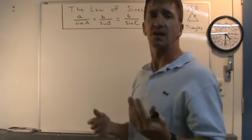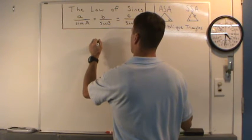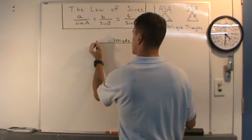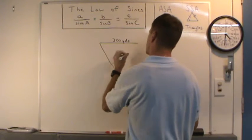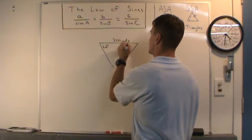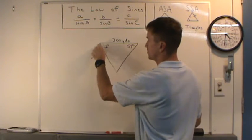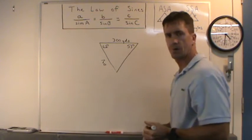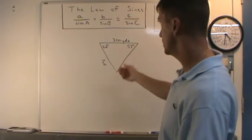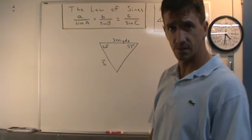We'll start out with an ASA example. Let's say you're given a triangle with 300 yards, and two angles: 62 degrees here and 53 degrees here. You have to find the distance from one point to another — I'll call it X. So we need to find that distance in this oblique triangle, where the known side is 300 yards, one angle is 62 degrees, and the other is 53 degrees. We can use the law of sines to solve this pretty easily.